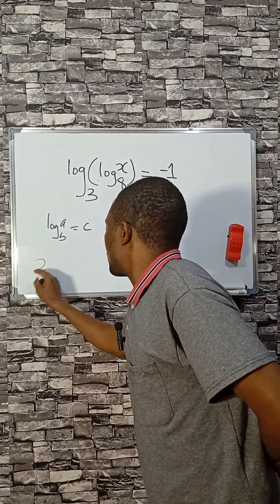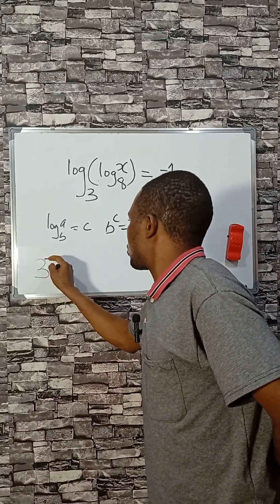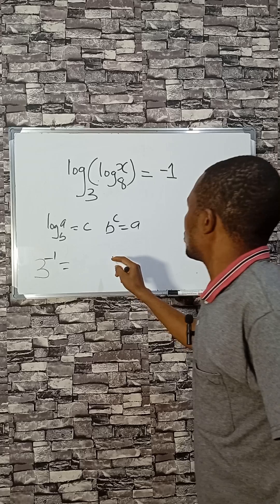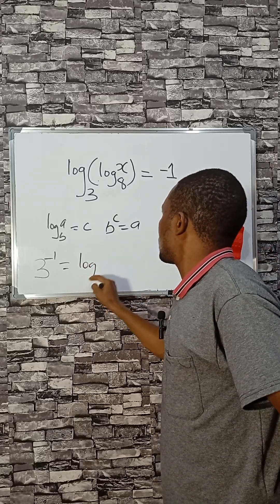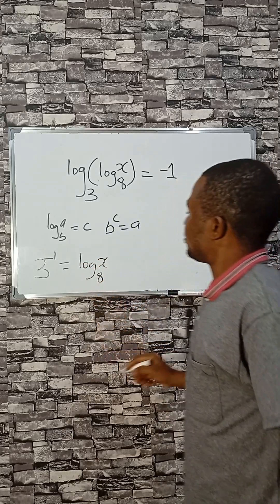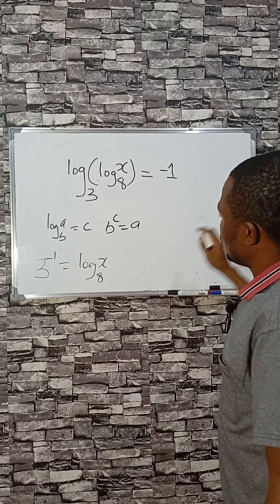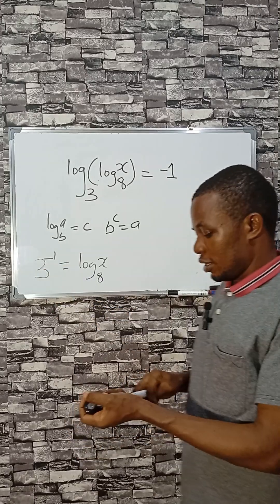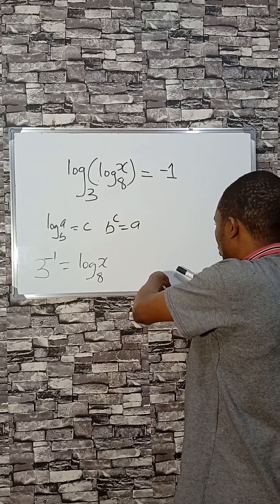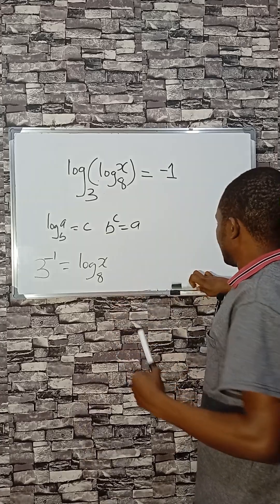Now we can say 3 raised to the power of minus 1 equals log X base 8. To take off this negative sign, if you divide by 1, take the reciprocal.